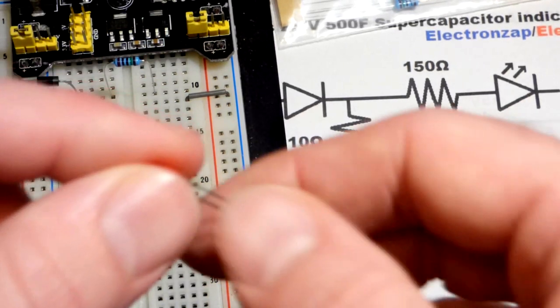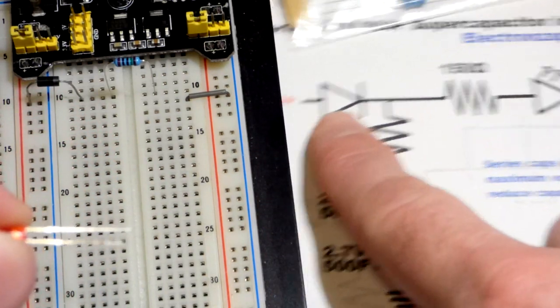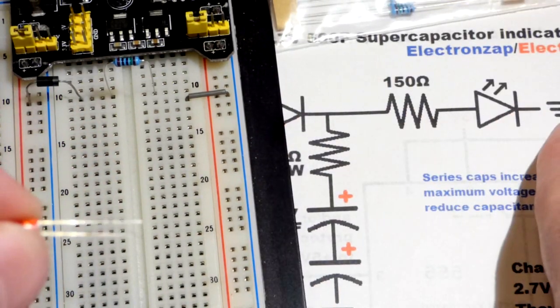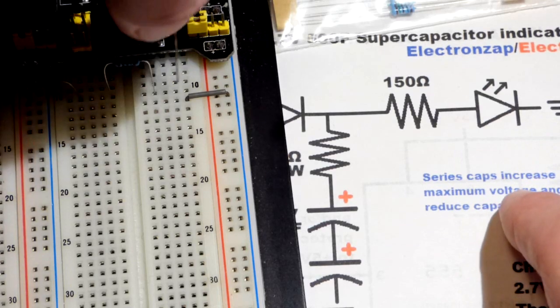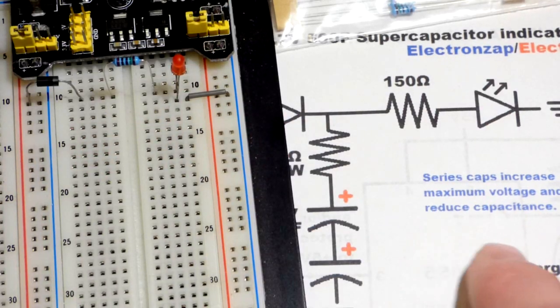I'm going to use a 150 ohm resistor because we're not going to be dealing with much voltage. Now we'll grab the LED. Of course the LED is polarized, long lead the anode goes towards the positive side of the circuit, short lead the cathode goes to ground.